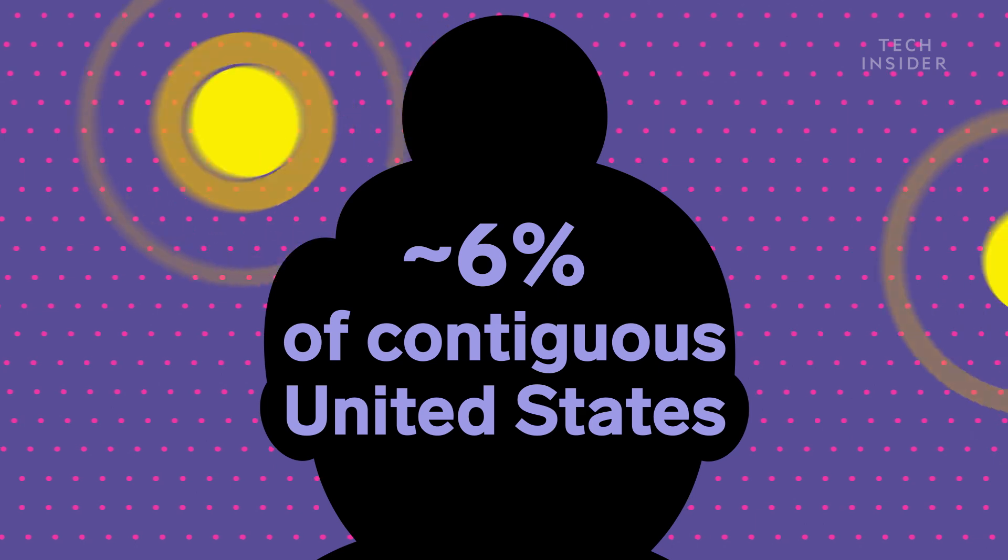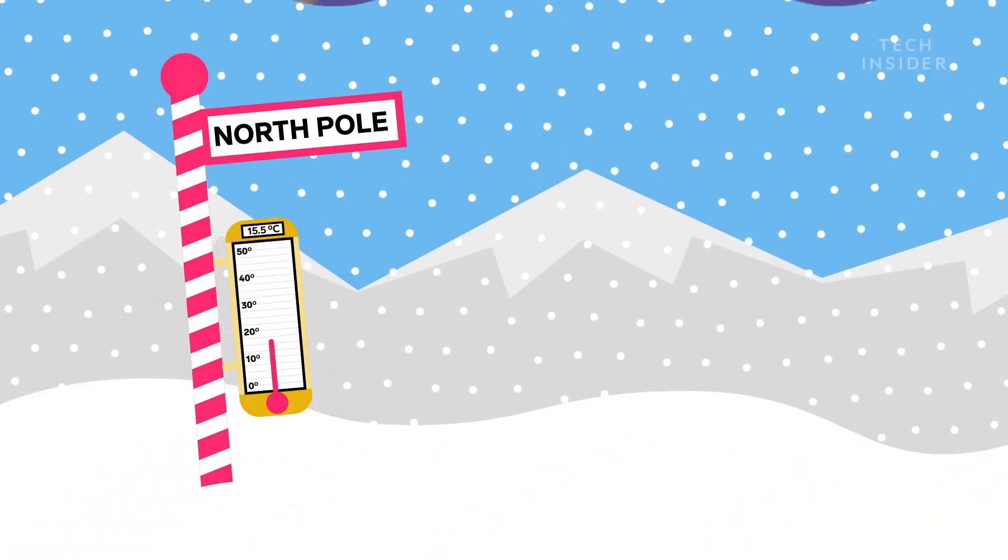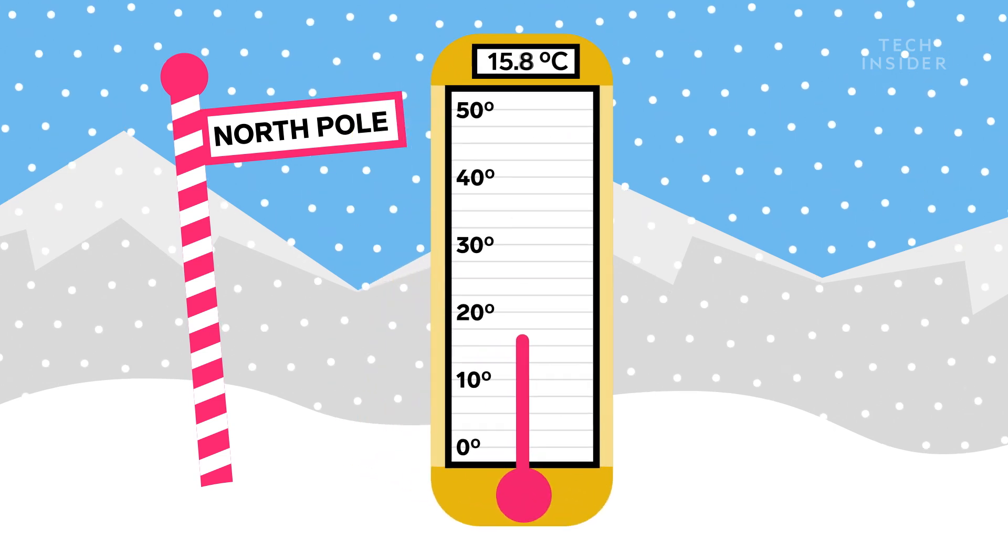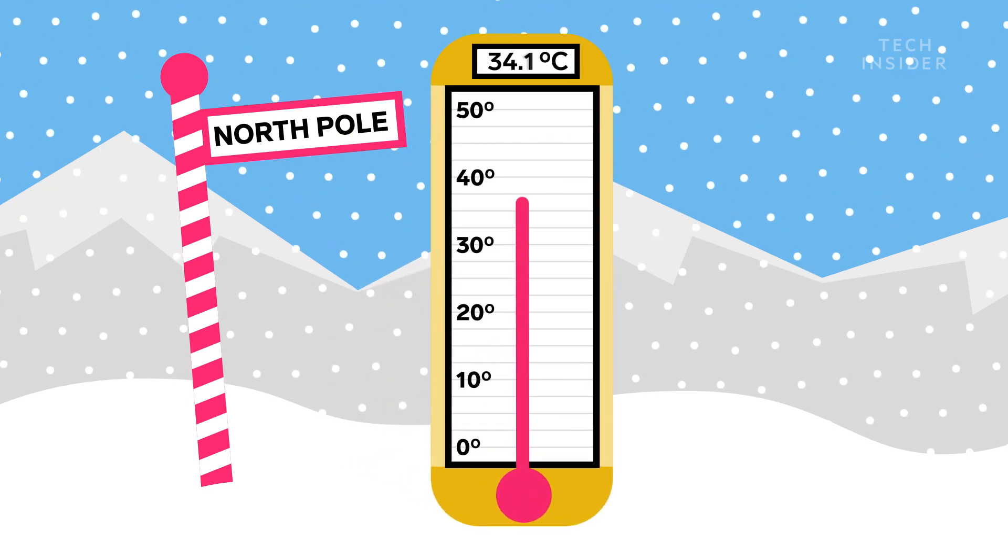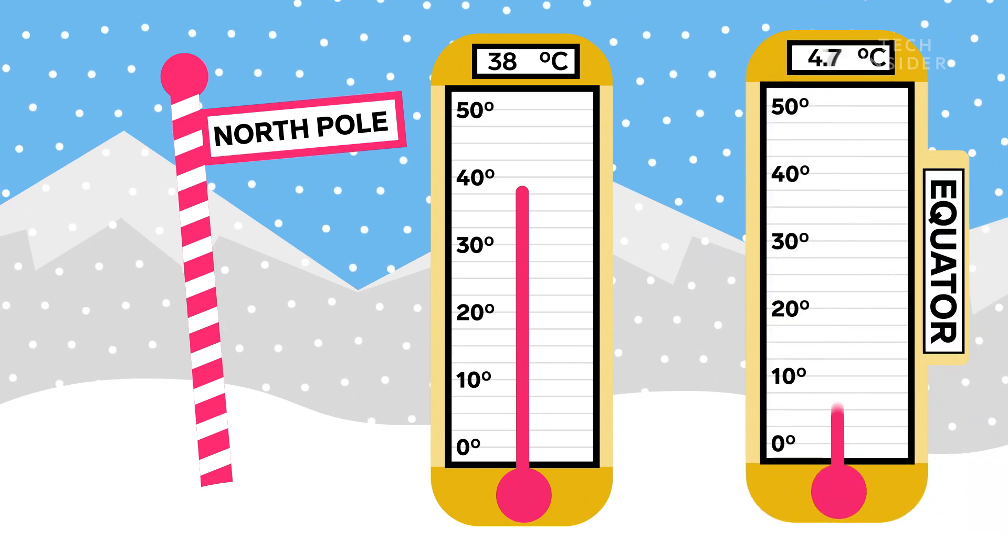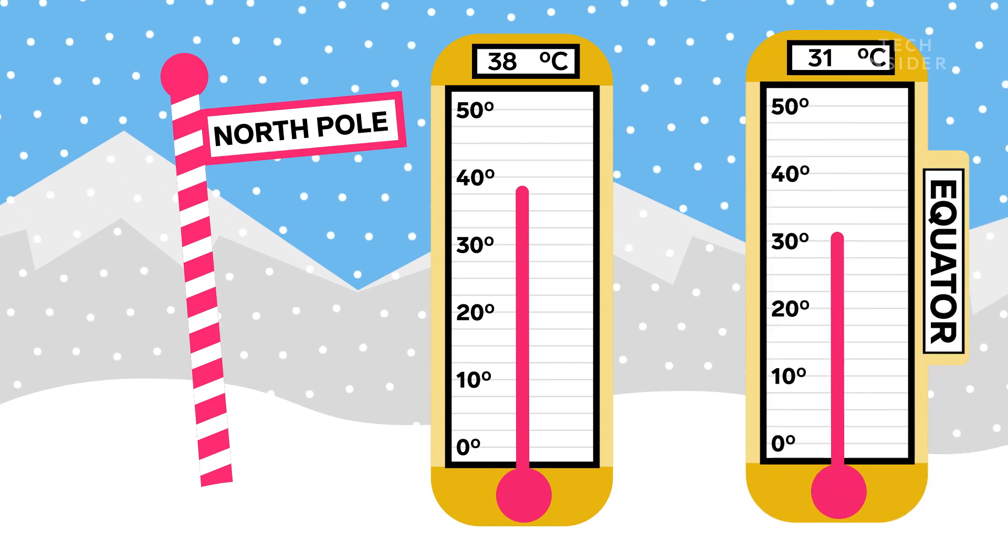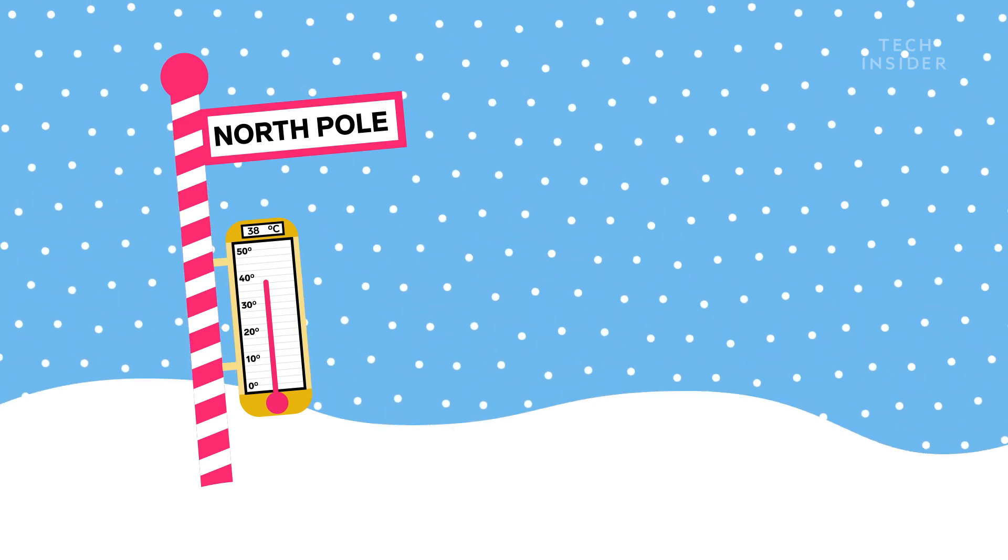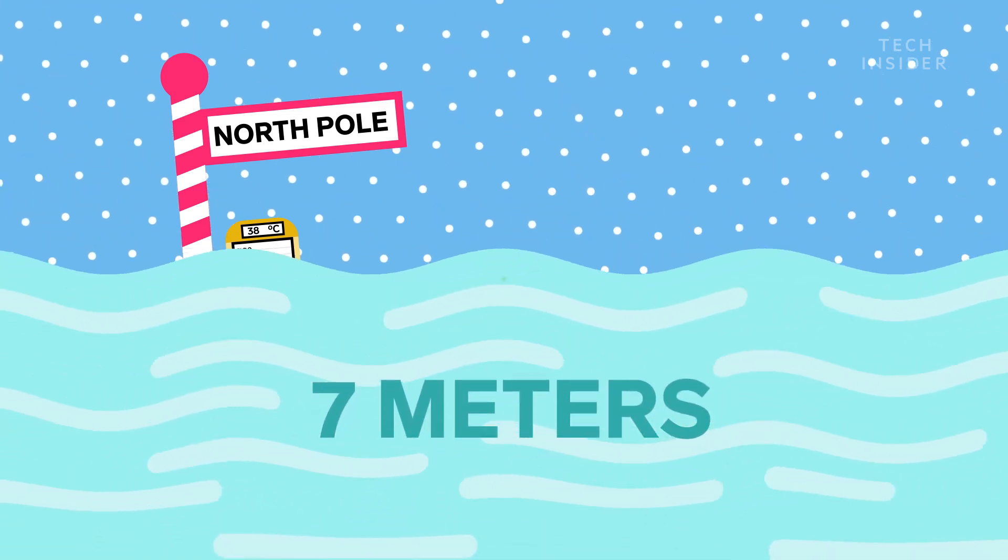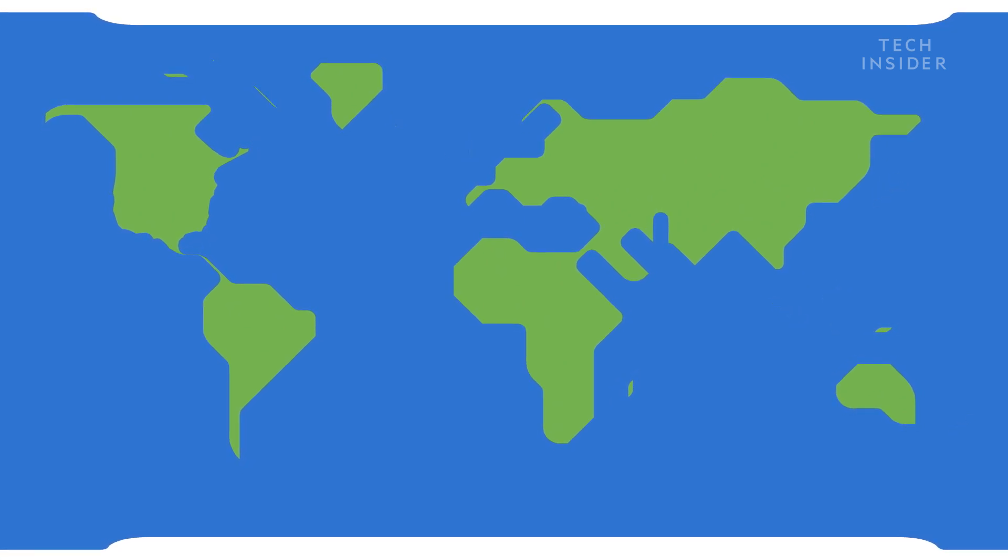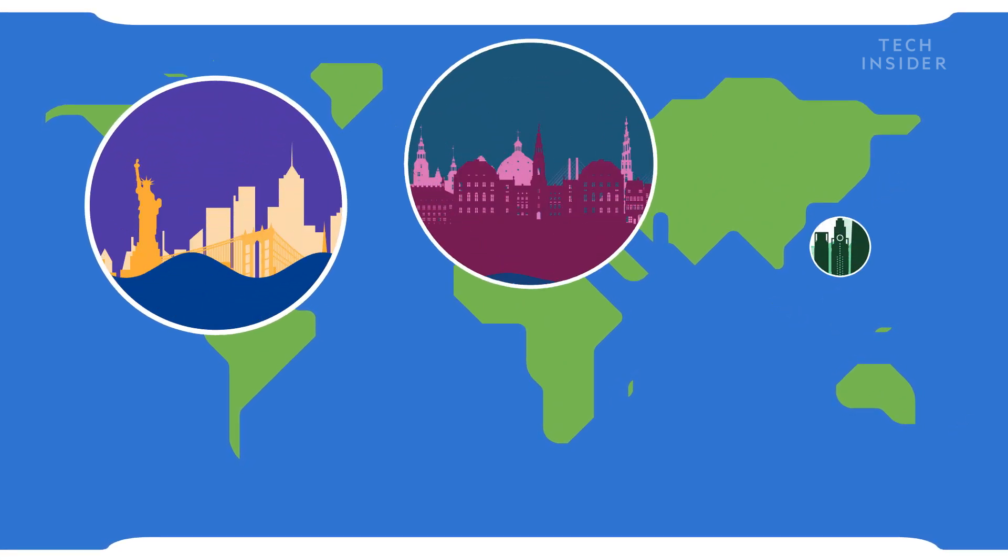But that's less of a worry than the floods. Temperatures at the North Pole would more than double to 38 degrees Celsius from 15.5 degrees Celsius. That's hotter than temperatures at the equator today. As a result, Greenland's ice cap would melt, causing sea levels to rise by 7 meters and flood nearly every coastal city on Earth. Say goodbye to New York, Copenhagen, and Tokyo.